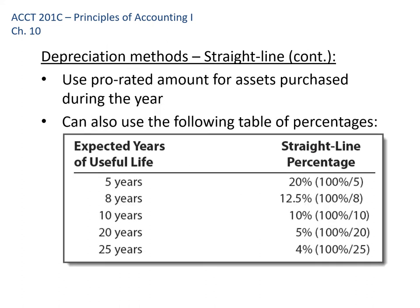One more note on straight-line: some people divide by the years while others use percentages. For a five-year asset, that's one-fifth per year, which equals 20%. For an eight-year asset, it would be 12.5% per year as the straight-line percentage.